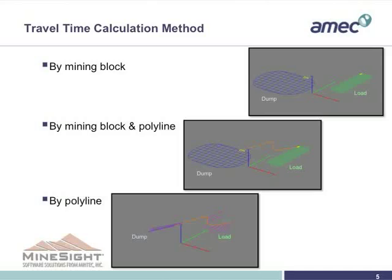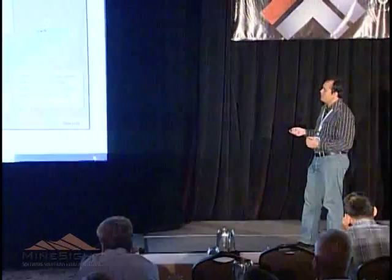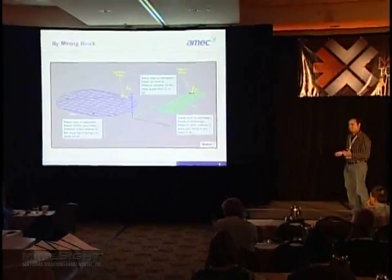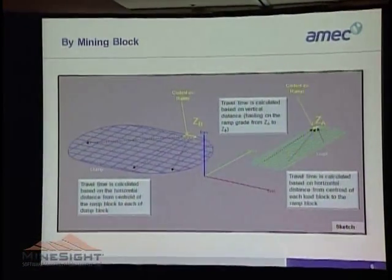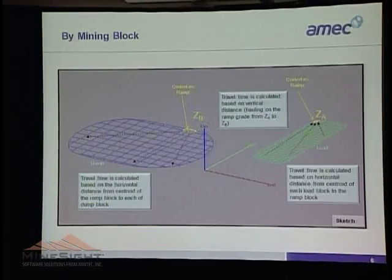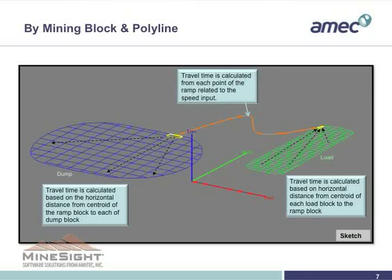There are some methods to calculate the travel time: by mining blocks, by mining blocks and polyline, and by polyline. By mining blocks, we measure the horizontal distance from the mining block to the ramp, coded as ramp, as well as from the dumping area to the dumping location. From point A to point B, we may use some kind of formula or equivalent flat haul (EFH) formulas to represent the distance between those two points. Another method is by mining block and polyline, where instead of using block-to-block distances, we use polylines to measure the travel times.